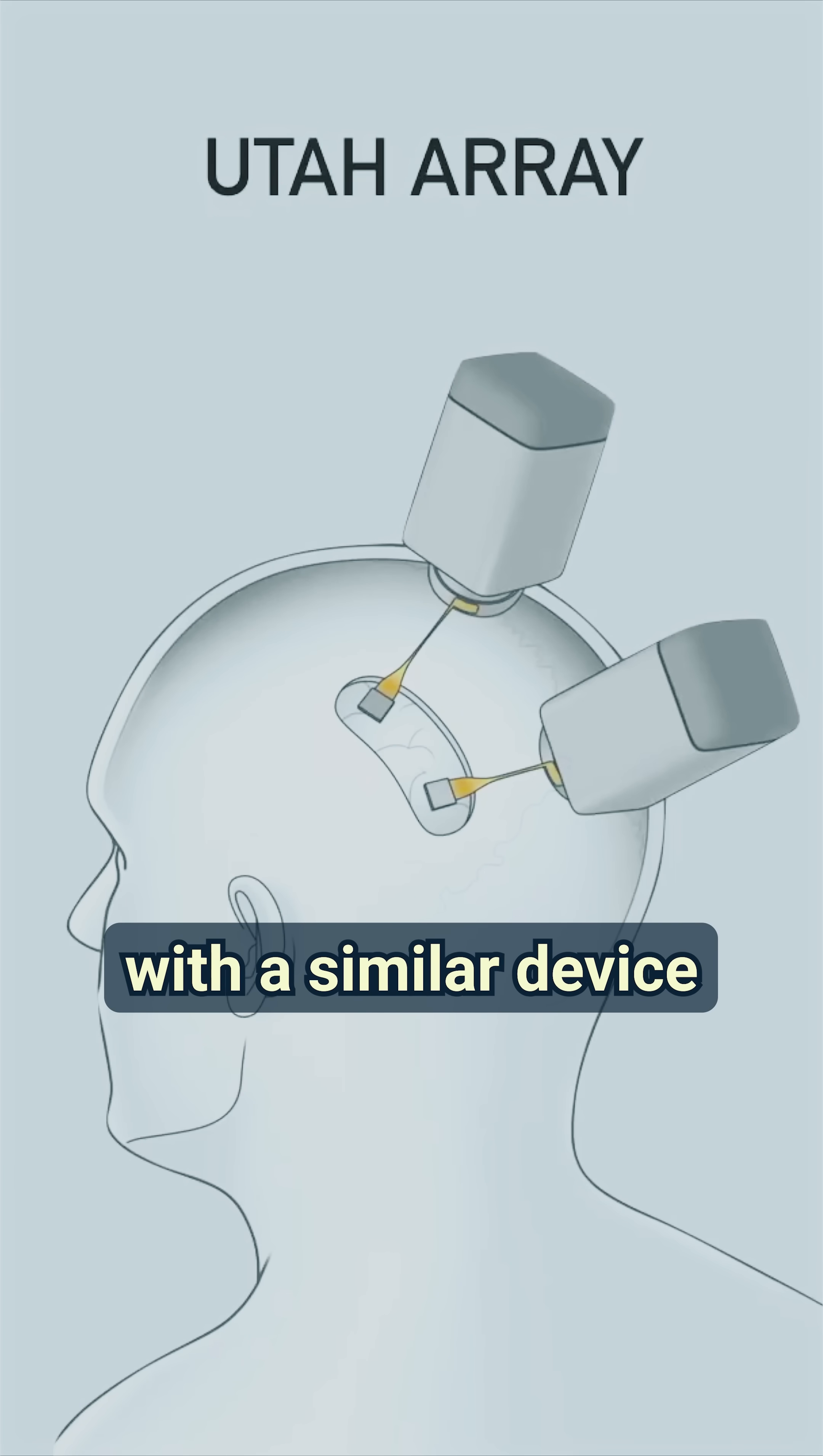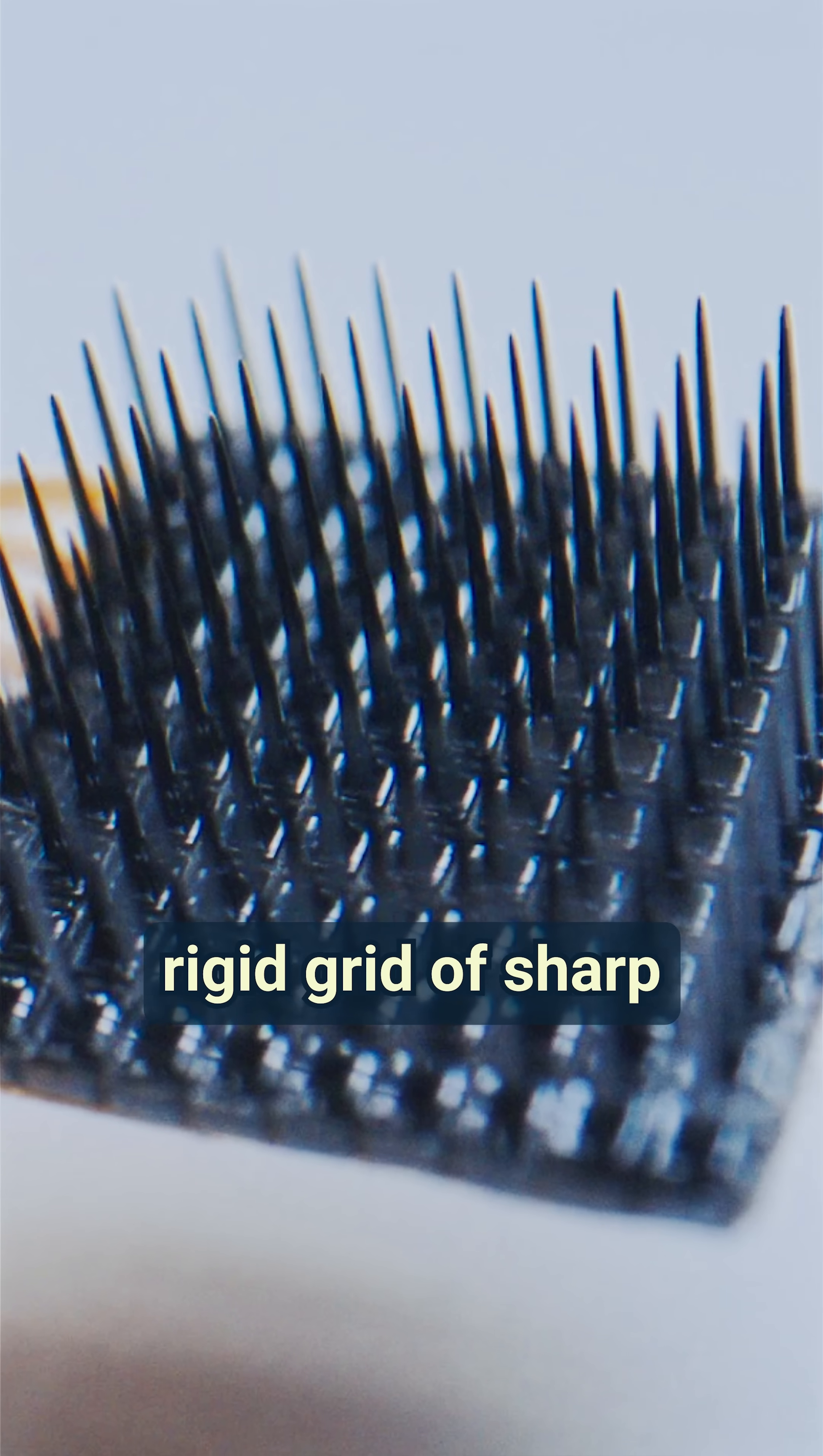For example, with a similar device called a Utah Ray, you can see this rigid grid of sharp metal electrodes.